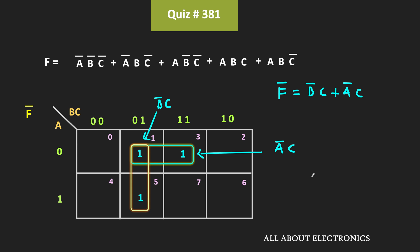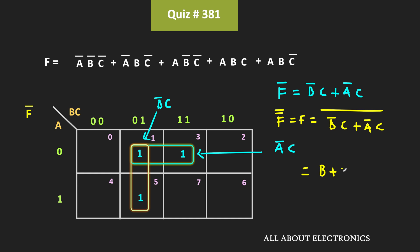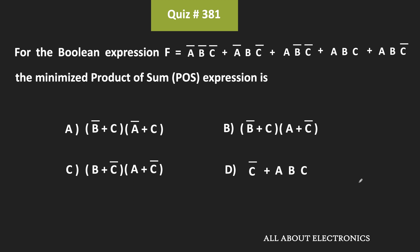Now to find the expression in the product of sum form, let us take the complement of this function. That means f double bar equals f, and that is equal to the complement of (b̄·c + ā·c). Using De Morgan's law, we can write this expression as (b + c̄)·(a + c̄). So this function is now in the product of sum form. This is the general procedure for converting any boolean function into the minimized product of sum form. The minimized POS form is equal to (b + c̄)·(a + c̄), and therefore for the given question, this is the correct answer.